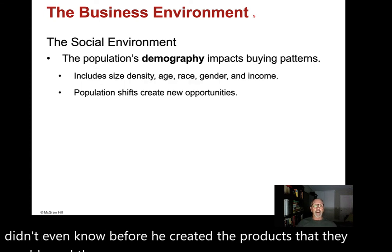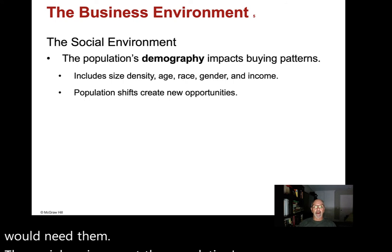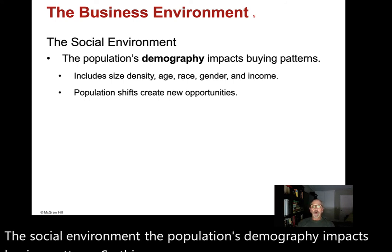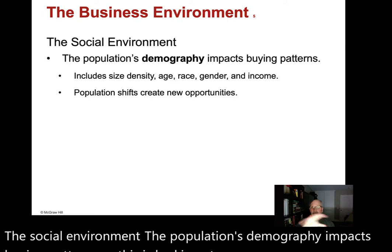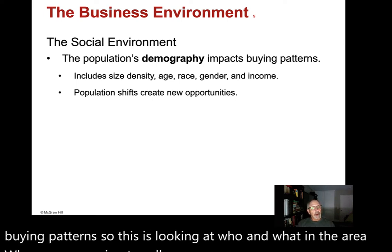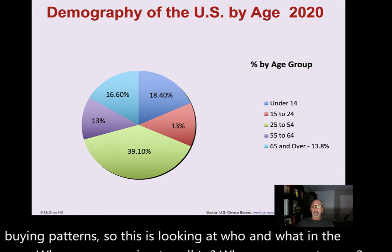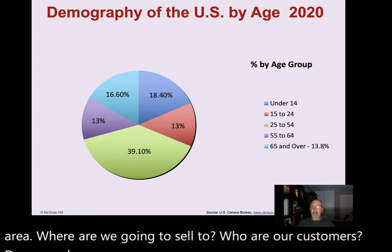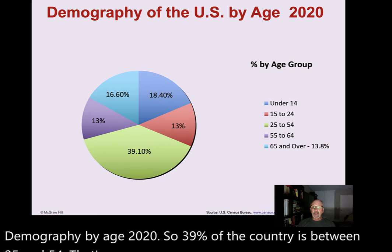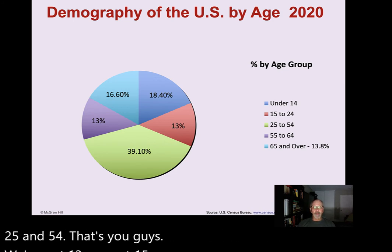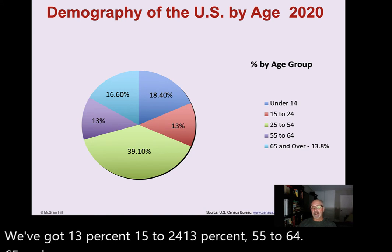The social environment: the population's demography impacts buying patterns — looking at who and what is in the area, where we're going to sell, and who our customers are. By age in 2020: 39% of the country is between 25 and 54, 13% are 15 to 24, 13% are 55 to 64, and 18.8% are 65 and over. The largest group is 25 to 54, which is where most commercials are geared.